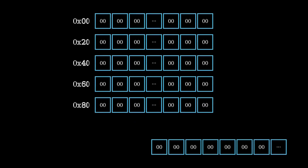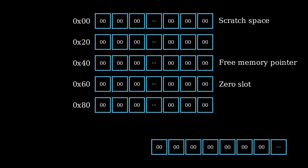Solidity assigns three special regions of the memory for special purposes. The first 64 bytes is called a scratch space. The next 32 bytes stores the free memory pointer — a pointer to a region in memory where you can store new data without worrying about overwriting old data. Initially this free memory pointer is set to 32 bytes starting from 0x80. The next 32 bytes after the free memory pointer is called a zero slot, and the 32 bytes after that is initially where the free memory starts.